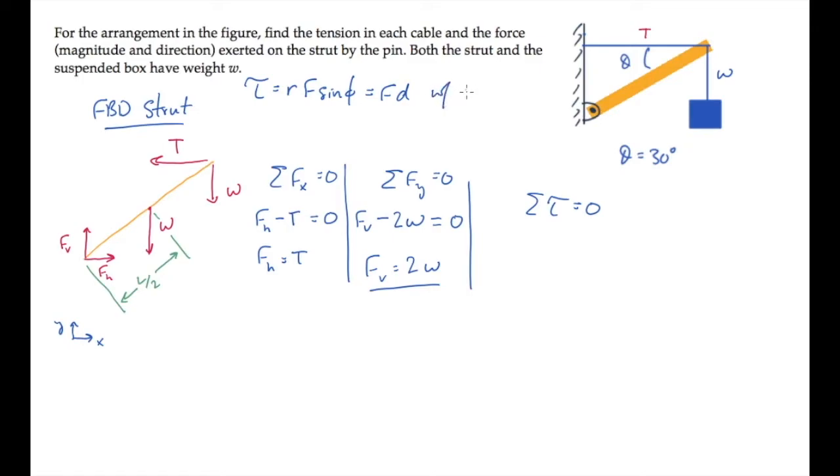Torque is a vector, and its direction is given by the right hand rule. Fingers of the right hand in the direction of R, curl them towards F, and the torque points in the direction of your thumb. In this case, it will be either into or out of the screen. We'll call torques out of the screen this way to be positive, and we'll sum torques about point A, the lower left end of the strut.